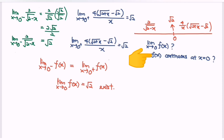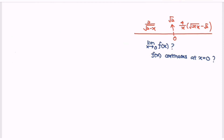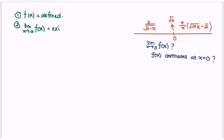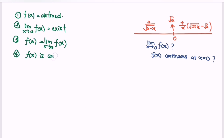Next, we determine whether f(x) is continuous at x equals 0. The conditions for continuity are: number 1, f(a) is defined; number 2, the limit when x approaches a for f(x) exists; number 3, f(a) is equal to the limit when x approaches a for f(x). Only then can we say f(x) is continuous at x equals a.